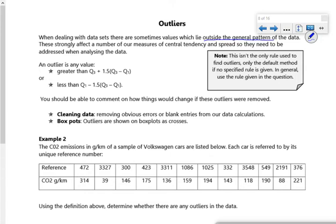We've got two different ways of working it out. We've got bigger than the upper quartile plus one and a half times the interquartile range, and we've got the lower quartile minus one and a half times interquartile range.